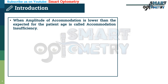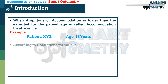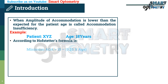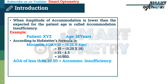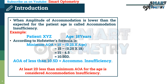When the amplitude of accommodation is lower than expected for the patient's age, it is called accommodation insufficiency. For example, at age 18, the minimum amplitude of accommodation according to Hofstetter's formula is: Amplitude = 15 − (0.25 × age) = 15 − (0.25 × 18) = 15 − 4.5 = 10.5 diopters. If an 18-year-old patient has an amplitude of less than 10.5 diopters, it may be accommodation insufficiency. Generally, at least 2 diopters below the minimum expected amplitude is considered accommodation insufficiency.